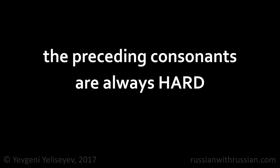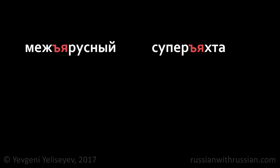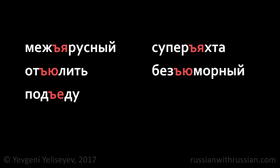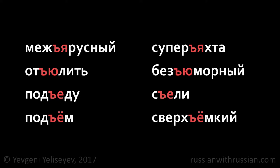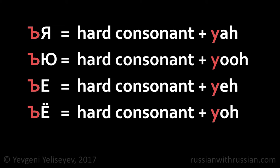Let's see some examples. Thus, we can say that in modern Russian the hard sign specifies the sound Й after hard consonants.